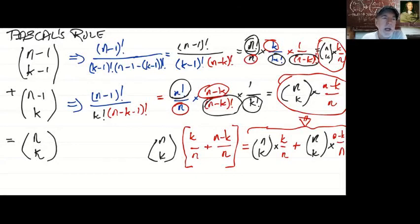So we end up with n choose k all times—so these k's are going to cancel, and we just end up with n all over the common denominator n, and that's just 1. So we've got 1 times n choose k, which is what we were looking for, n choose k.